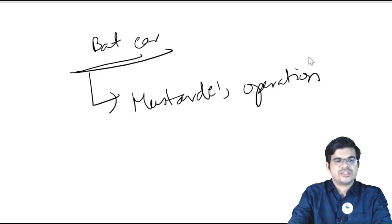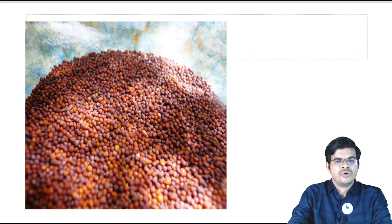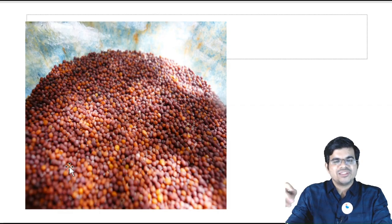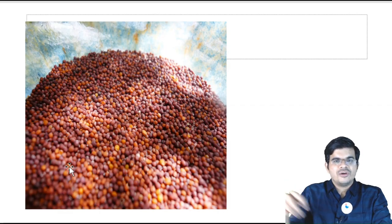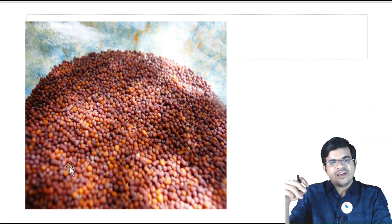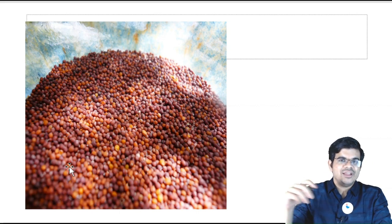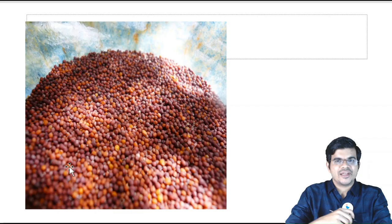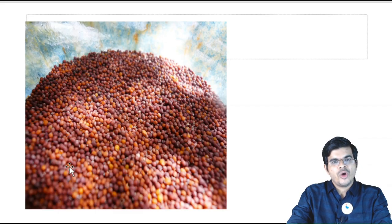Mustarde's operation — if you look at the word mustard, the mustard that you take for the vegetable curries, the difference is that there is an extra E here. Mustarde's operation is done for bat ear.